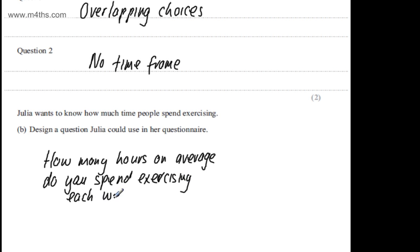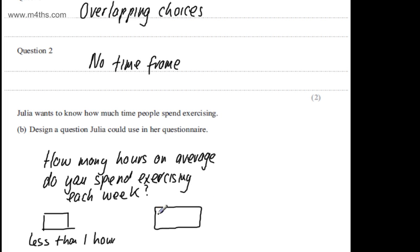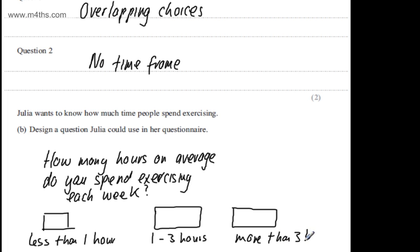Now let's pick some choices. The first box will be less than one hour. The second choice is one to three hours. And finally, more than three hours. Everybody can fit into one of these boxes — if you do no exercise, that's less than an hour; if you do two hours, you go in the middle box; if you do more, you go in the last. We need at least three choices, a time frame, and the question to be in clear English: 'How many hours on average do you spend exercising each week?'